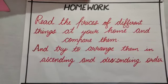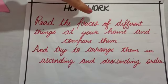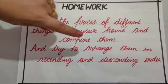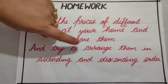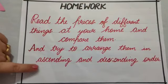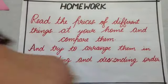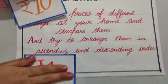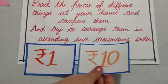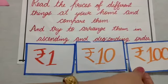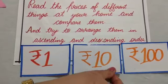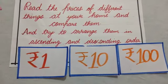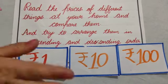Students, now this is your homework. Read the prices of different things at your home and compare them. Try to arrange them in ascending and descending order. You can prepare this type of fake currency notes at home and play this interesting game yourself or with your siblings. Thanks, see you soon. Bye-bye.